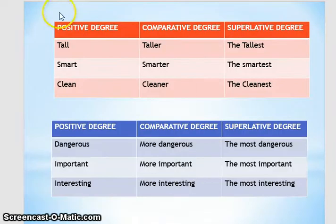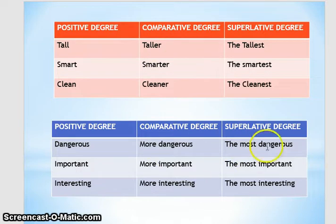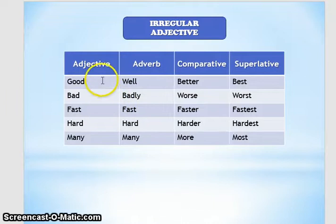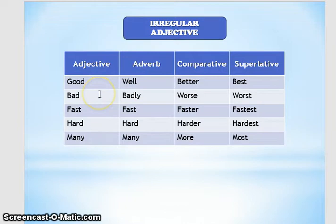Di positive degree bisa dilihat perbandingan antara satu syllable dan dua syllable. Selain itu ada juga irregular adjective — perubahannya tidak tetap. Yang paling sering digunakan adalah: good → better → best, dan bad → worse → worst.